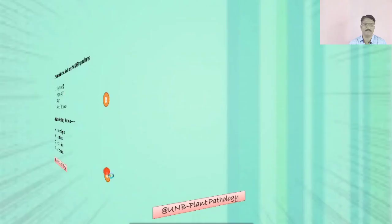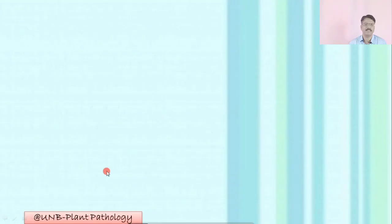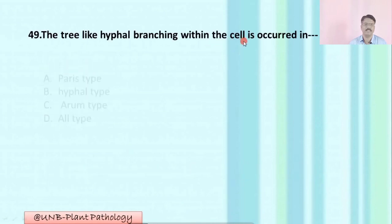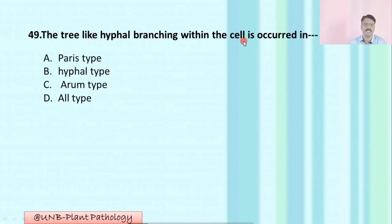Question number forty-nine: The tree-like hyphal branching within the cell occurs in — A: Paris type; B: Hypal type; C: Arum type; D: all types. The correct answer is C: Arum type.